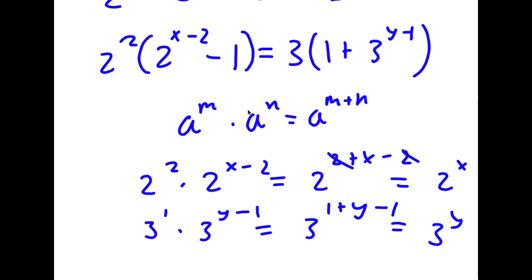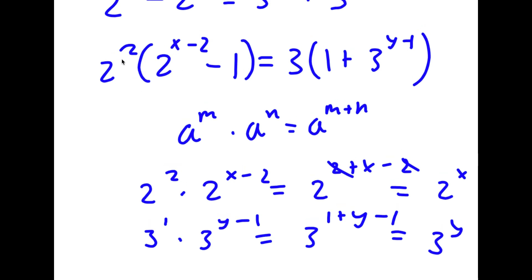So now I have 2 squared times 2 to the power of x minus 2 minus 1, equal to 3 times 1 plus 3 to the power of y minus 1. Notice that 2 squared is an even number and 3 is an odd number.